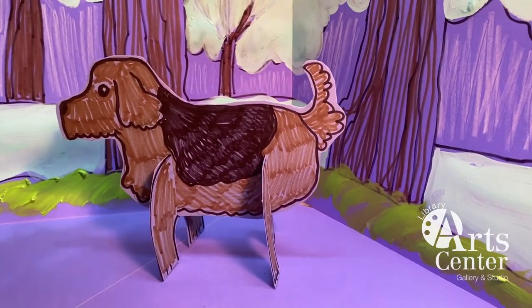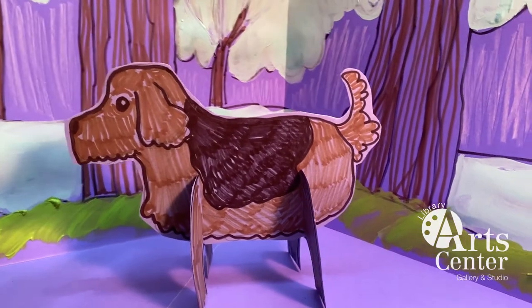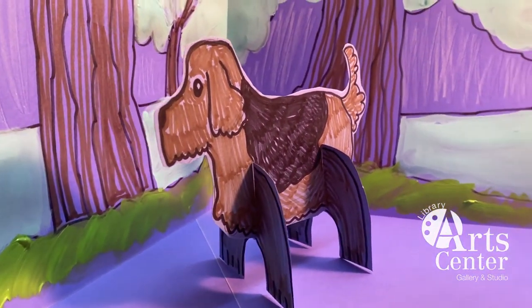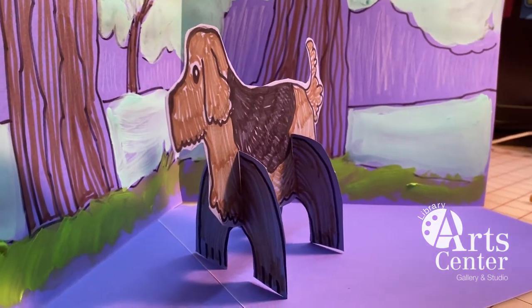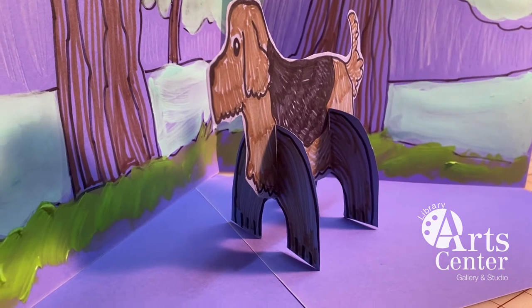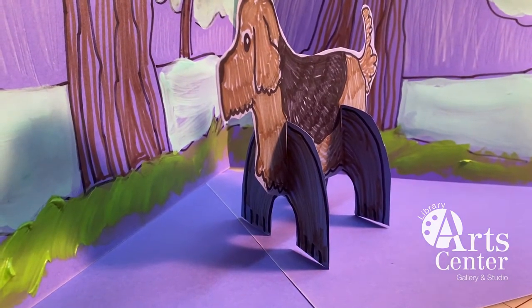This is the little freestanding dog that we're going to make out of cardboard today. I put mine into a little park that I drew and you can draw one too. I'm going to show you the materials that we need to make the project now.